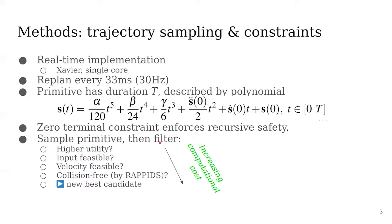We sample primitives first and then sequentially impose constraints. First, we check if it has a higher utility, is input feasible, is velocity feasible, and is collision-free. If it passes all those constraints, then we have a candidate collision-free trajectory. I will explain those filters in the following slides.